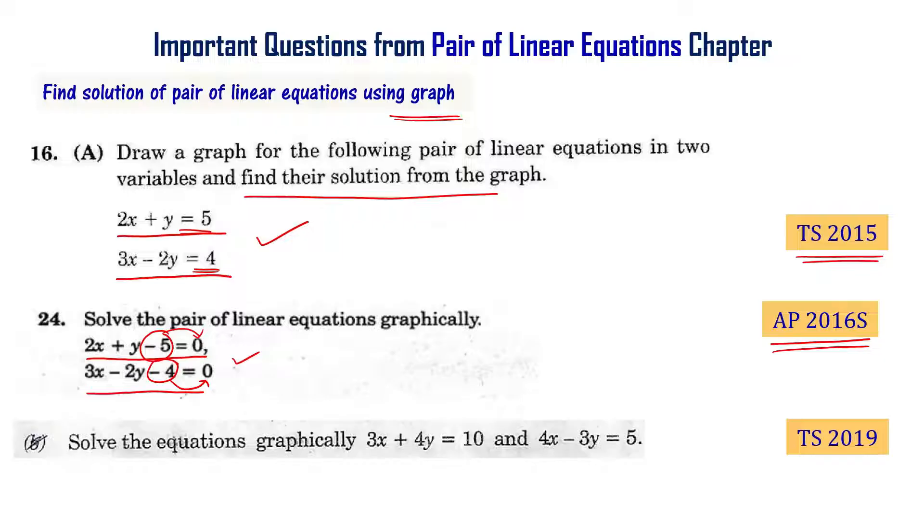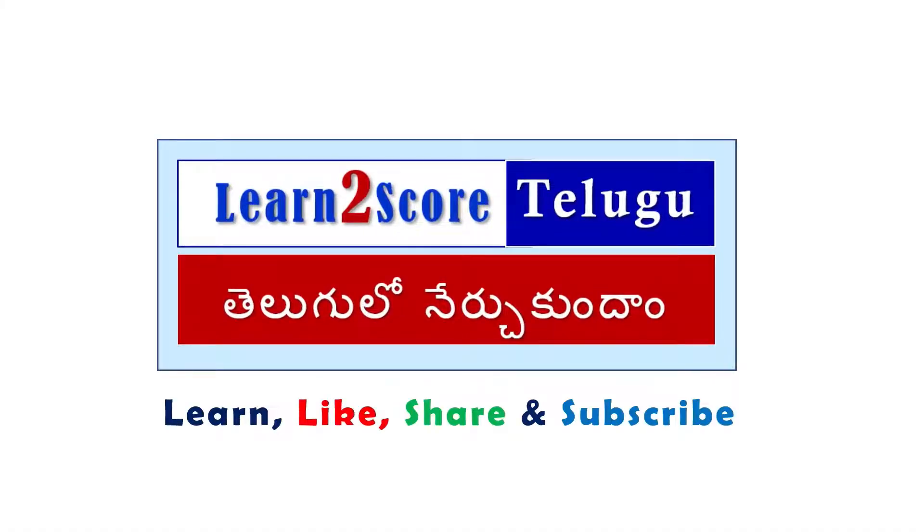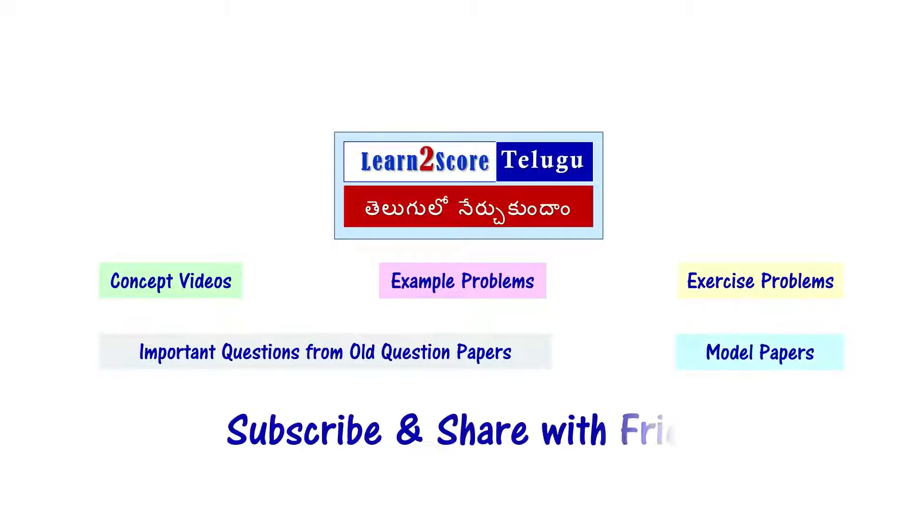Solve the equation graphically: 3x + 4y = 10 and 4x - 3y = 5. This is from Telangana final exam 2019. In this video, I am going to show how to solve this kind of problems by solving this particular example problem. Subscribe to our channel now and share it with your friends.